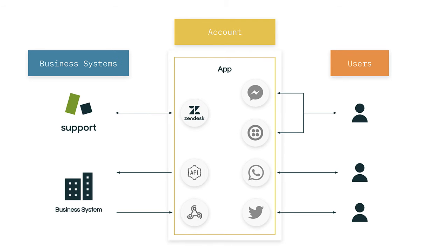Then on the right side, you can see how end users interact with Sunshine Conversations apps. Users can communicate with businesses via different messaging channels such as Facebook Messenger, Twilio, WhatsApp, and Twitter. User and message data is stored on the app level.